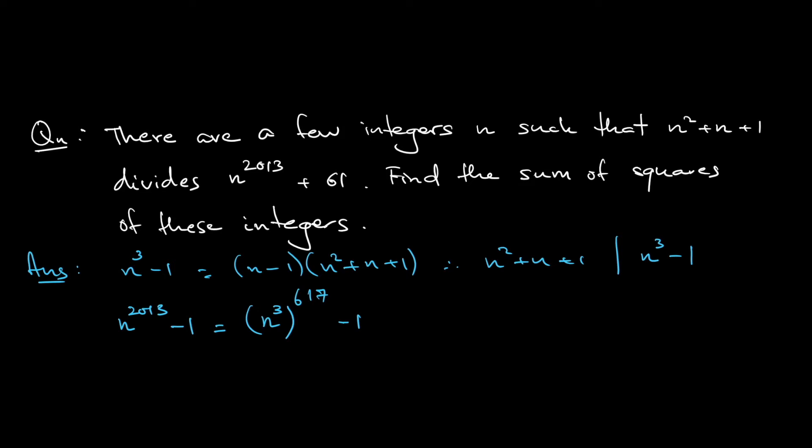Notice that the power is odd, right? In fact, this doesn't even matter. n³ to the power of 671, not 617, sorry, 671. This in fact, I can write it as (n³ - 1) multiplied by some factors, right? So, that means that this is divisible by n³ - 1.